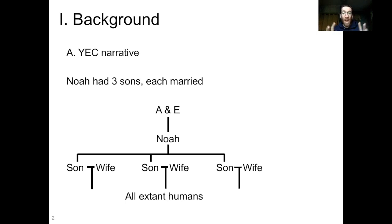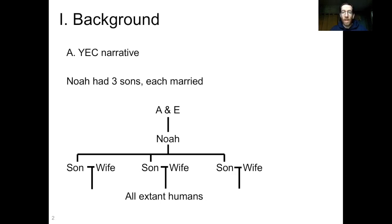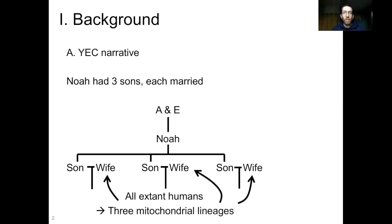So if we draw this out graphically, this is the phylogeny we get. We have Adam and Eve, we have Noah, we have Noah's three sons — one, two, three — and each of them is married. The descendants of those three couples represent all extant humans. Because mitochondrial DNA is only inherited maternally, that is to say through the mother, we have three distinct mitochondrial lineages here, one for each of Noah's daughters-in-law. So we should be able to look at mitochondrial DNA in modern humans and identify these three clades of mitochondrial DNA.